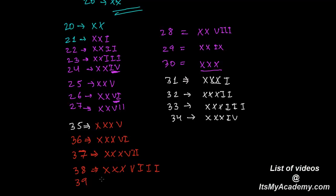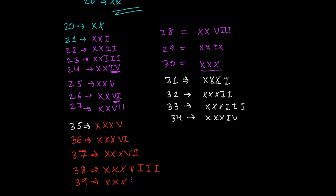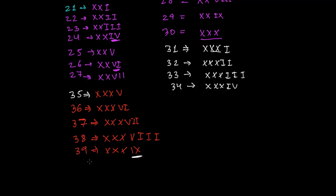For 39, it may look complicated but it's actually easy. Write XXX for 30, then add 9 — and 9 is represented as IX — giving XXXIX. Now for 40: can we write four X's together? No, we absolutely cannot write XXXX — that violates the rule that symbols can be repeated a maximum of three times only.